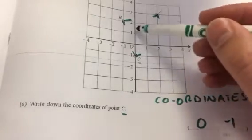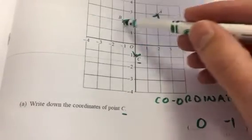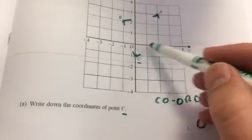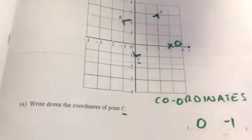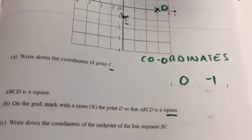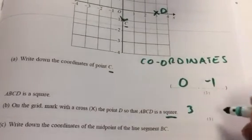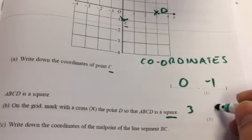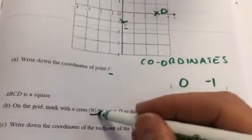But it's 3 up and 1 across between those points, so I'm going to go 1 up and 3 across. D will be there, so I can state that D would be 3 and 0. It just has to mark X.